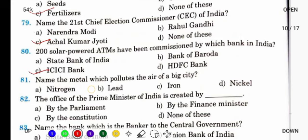Name the metal which pollutes the air of a big city. किसी भी बड़ी city में ज़्यादा pollution हो जाता है — कौन से metal से? It is lead. Lead से वहाँ pollution होता है.